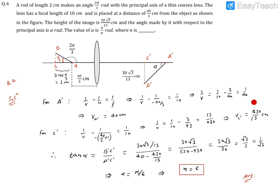After simplification, this comes out to be 40 centimeters. That means from the lens up to point A', the distance is 40 centimeters.